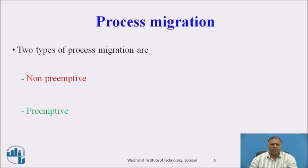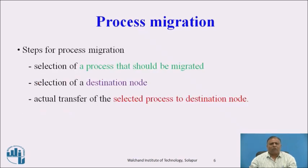Preemptive process migration is costlier than non-preemptive. The process environment is also moved along with the process. The steps for process migration are: selection of the process to be migrated, selection of a destination node, and actual transfer of the selected process to the destination node. The first two steps belong to migration policy, and the third step belongs to migration mechanism.